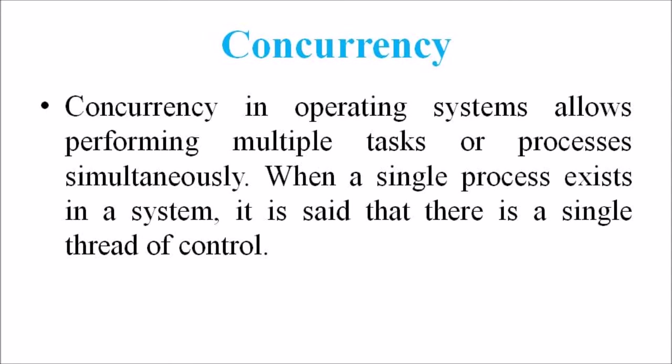When it comes to concurrency, it allows performing multiple tasks or processes simultaneously. When a single process exists in a system, it is said that there is a single thread of control. However, most systems have multiple threads — some active, some waiting for CPU, some suspended, and some terminated. Systems with multiple CPUs inherently permit concurrent threads of control, but systems running on a single CPU use appropriate algorithms to give equitable CPU time to threads to enable concurrency. In an object-oriented environment, there are active and inactive objects. Active objects have independent threads of control that can execute concurrently with threads of other objects, and they synchronize with one another as well as with purely sequential objects.